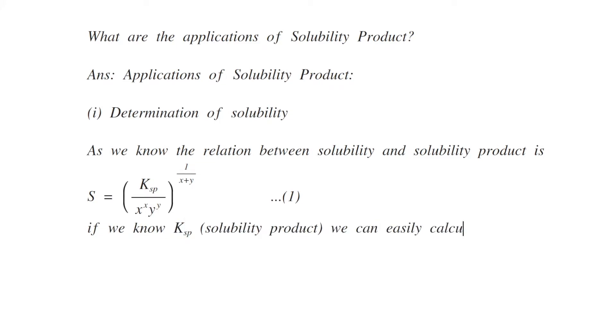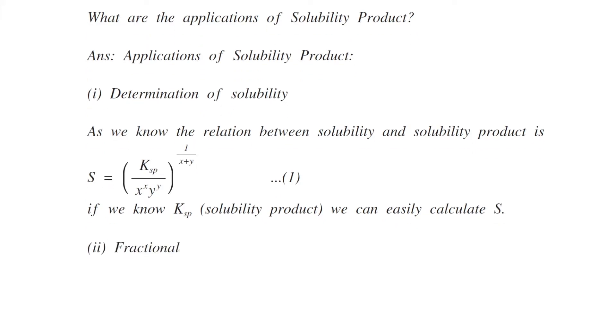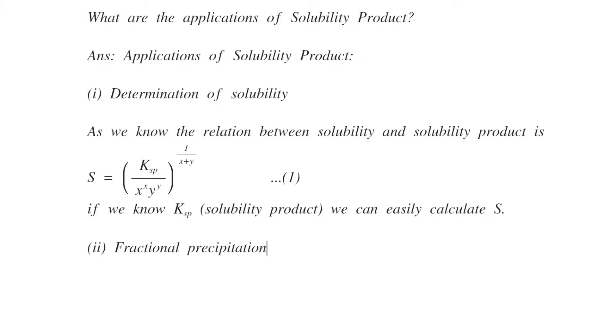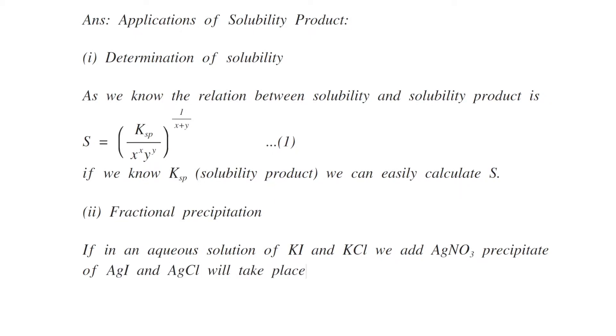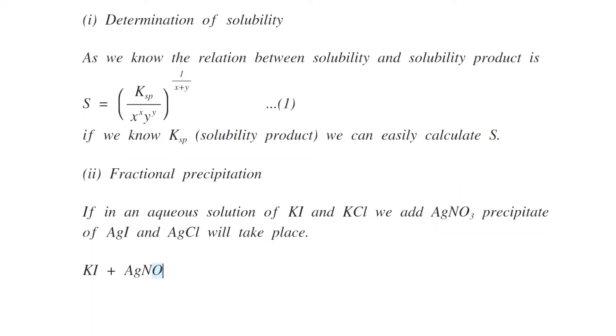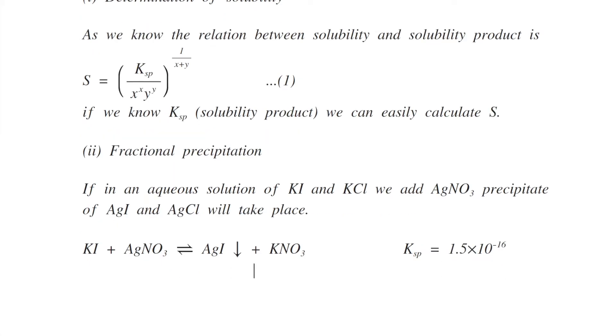Second application: fractional precipitation. If in an aqueous solution of KI and KCl we add silver nitrate, precipitate of silver iodide and silver chloride will take place. KI plus AgNO3 gives AgI as a precipitate plus KNO3, and KCl with AgNO3 gives AgCl plus KNO3.